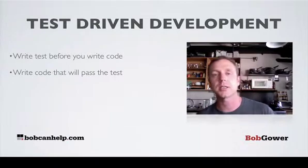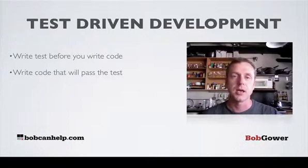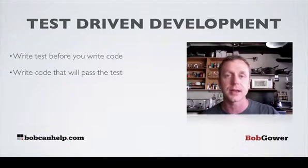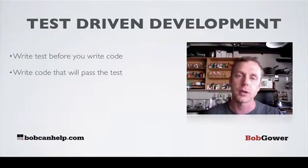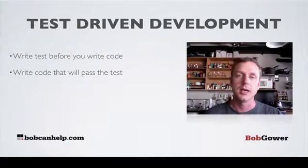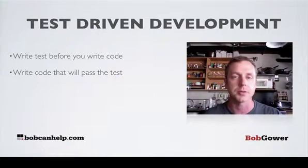Now in some ways this can slow things down on the front end. But just like Toyota's habit of stopping their production line when a defect was found actually sped things up — because you didn't have to deal with the defect later — the same is true of automated testing. You don't have to deal with defects later. The simplest way to deal with bugs in your software: don't write bugs in the first place. And test-driven development really helps with that.